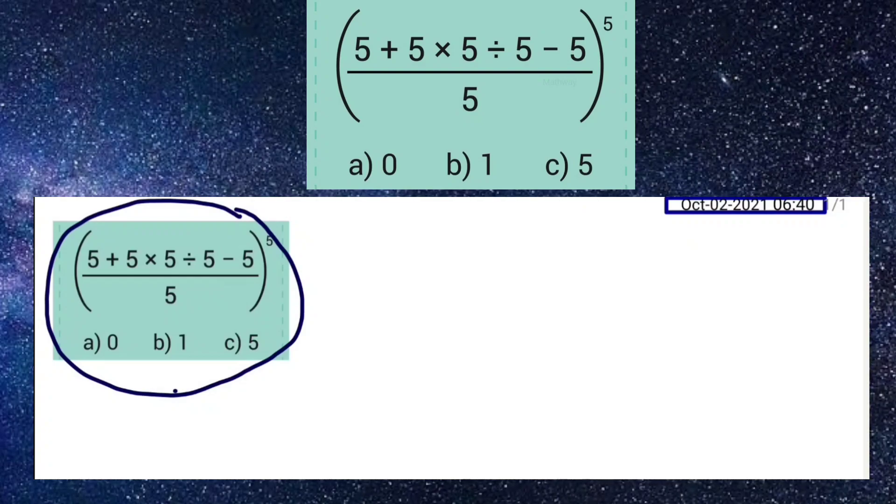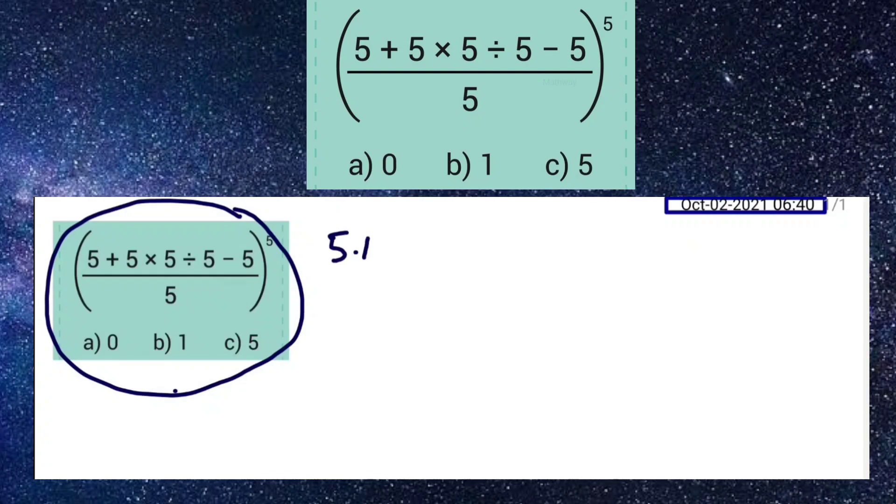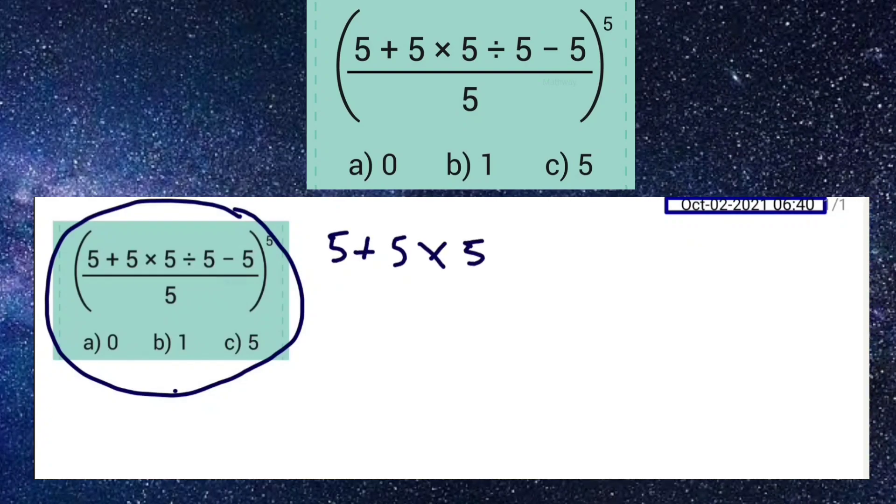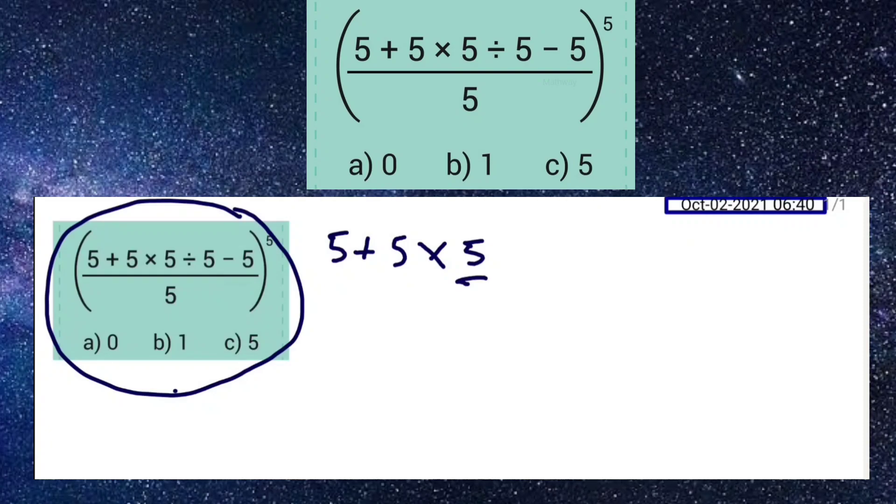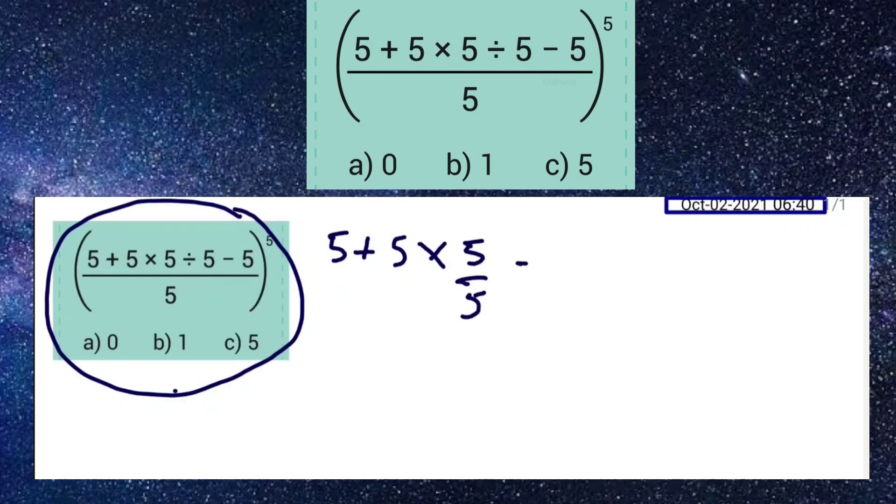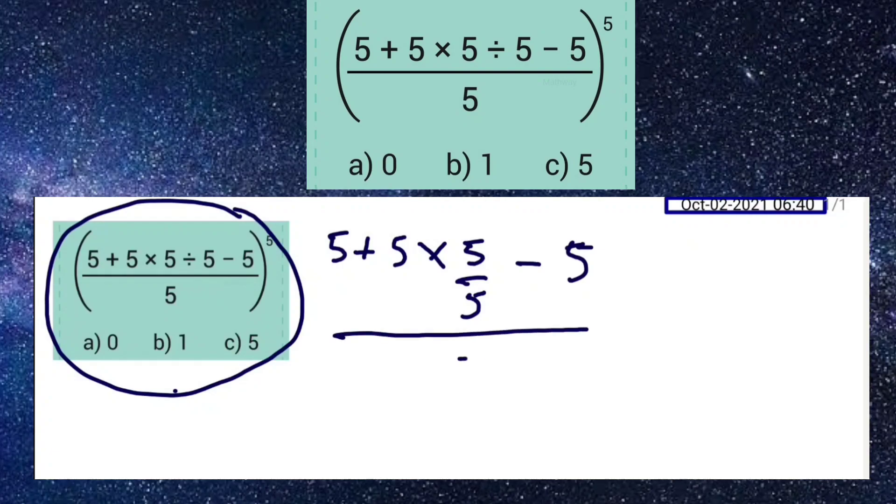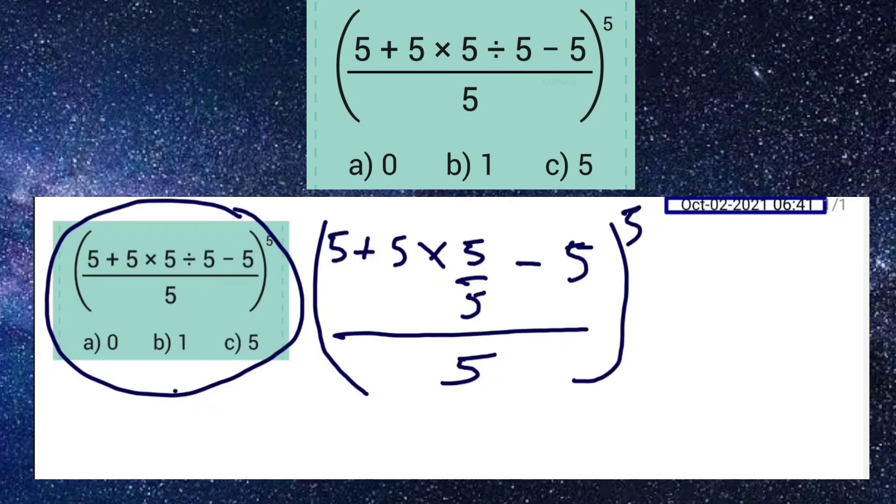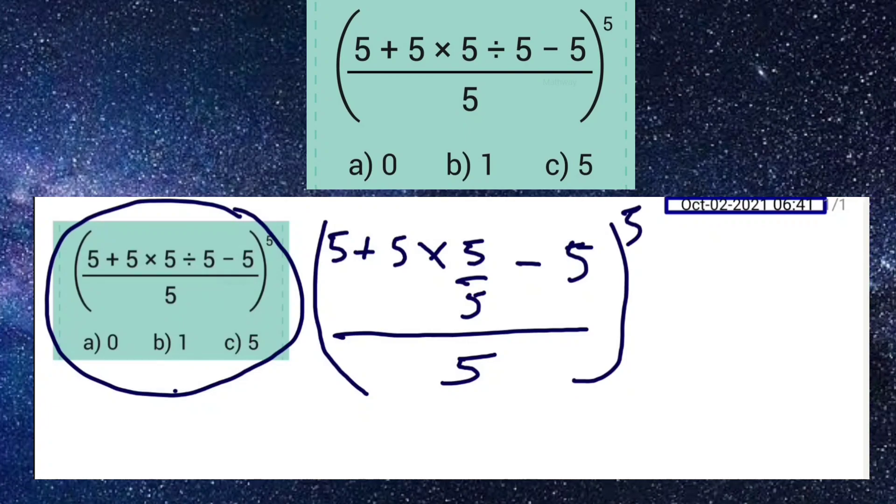See here how it's solved. See friends, 5 plus 5 multiply 5, and here you divide by 5, minus 5, and the whole bracket raised to the power of 5. This is the equation you need to solve.